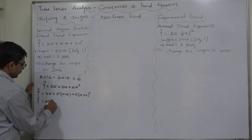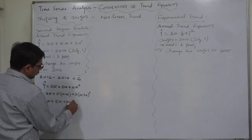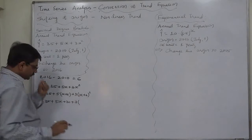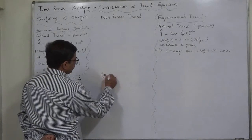35 as it is. 5 into x is 5x. 5 into 6 is 30. Plus 3 into, first of all we have to make the square of it, x plus 6 into x plus 6.